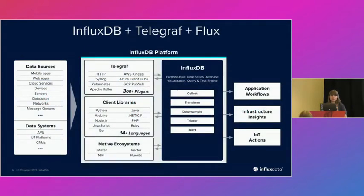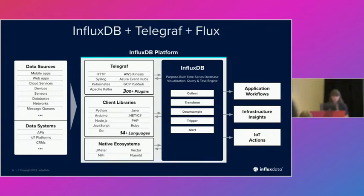When it comes to our platform, we break it out into three architectures. The first is our data sources — the actual devices that transmit time series data. Then we have the core InfluxDB platform, which includes Telegraf, our open source ingest agent, our client libraries that allow you to write in your preferred coding language to get data into InfluxDB, and native ecosystems. From there you can collect, transform, downsample, and alert off this data for application workflows, infrastructure insights, and IoT actions.